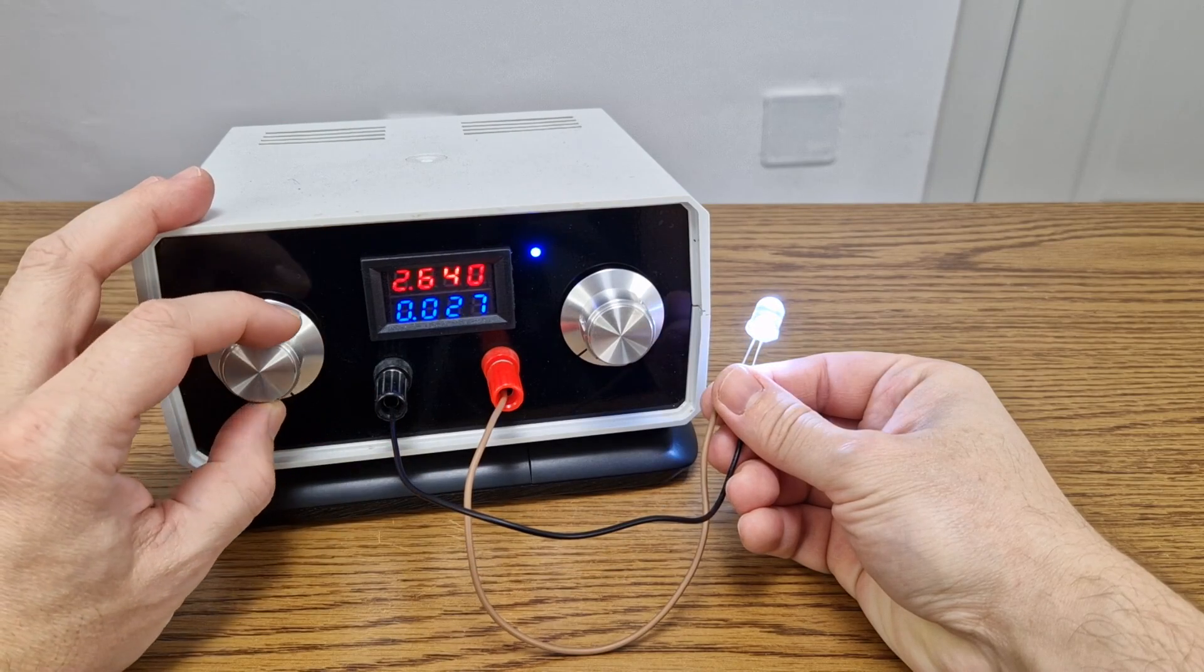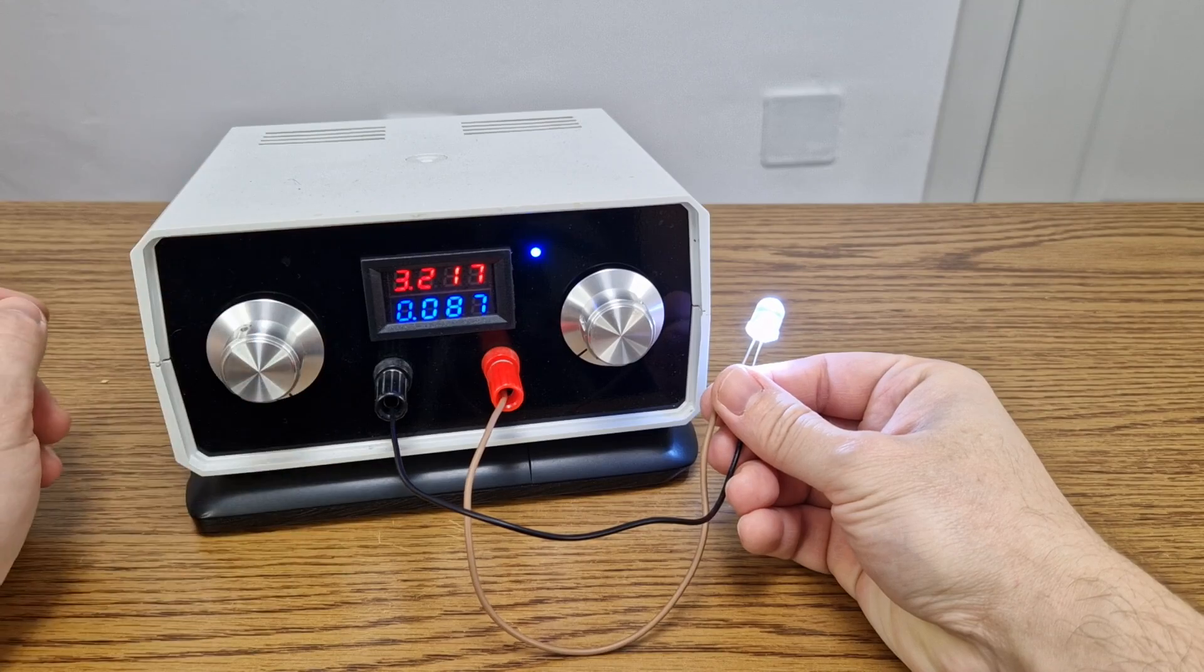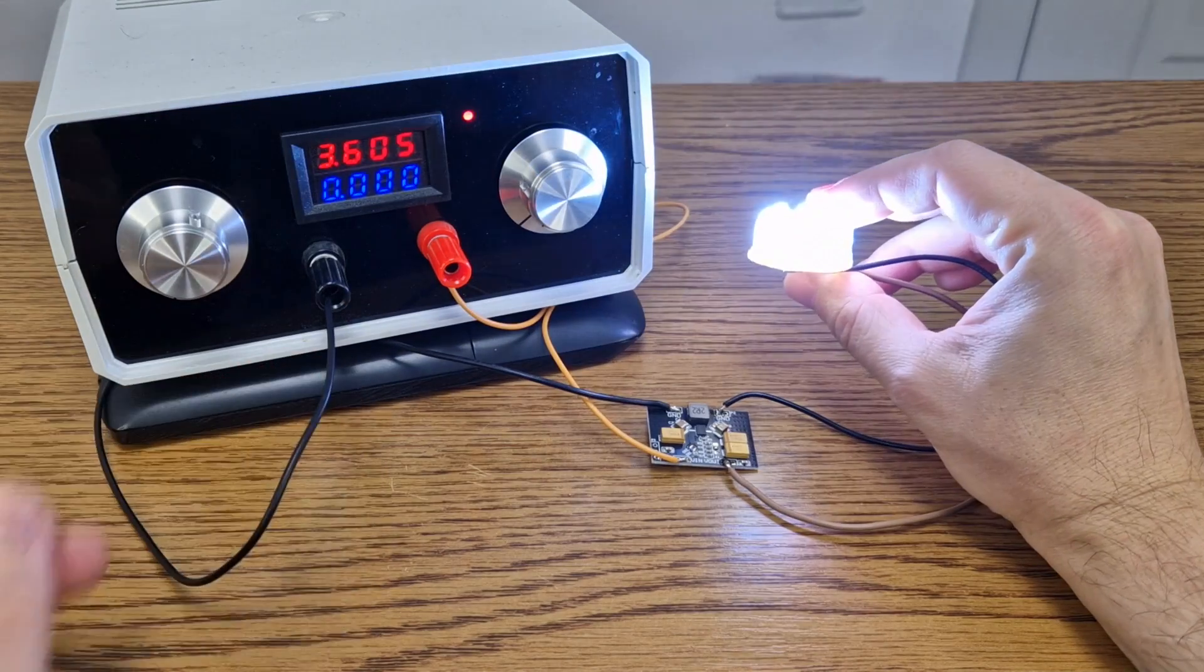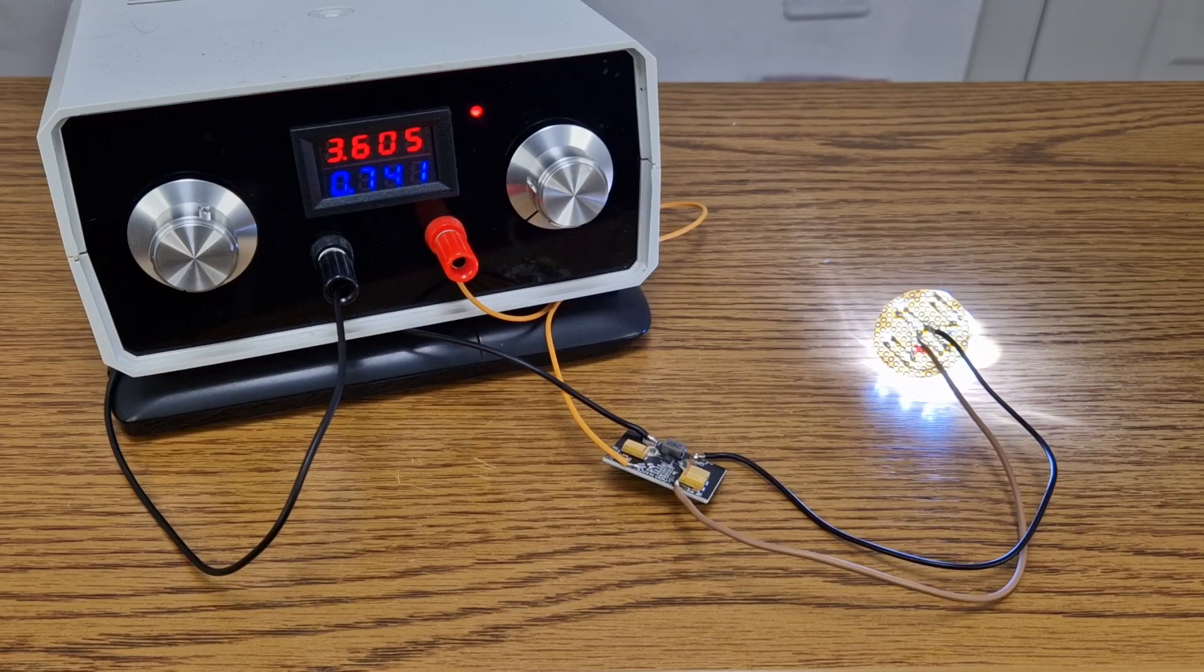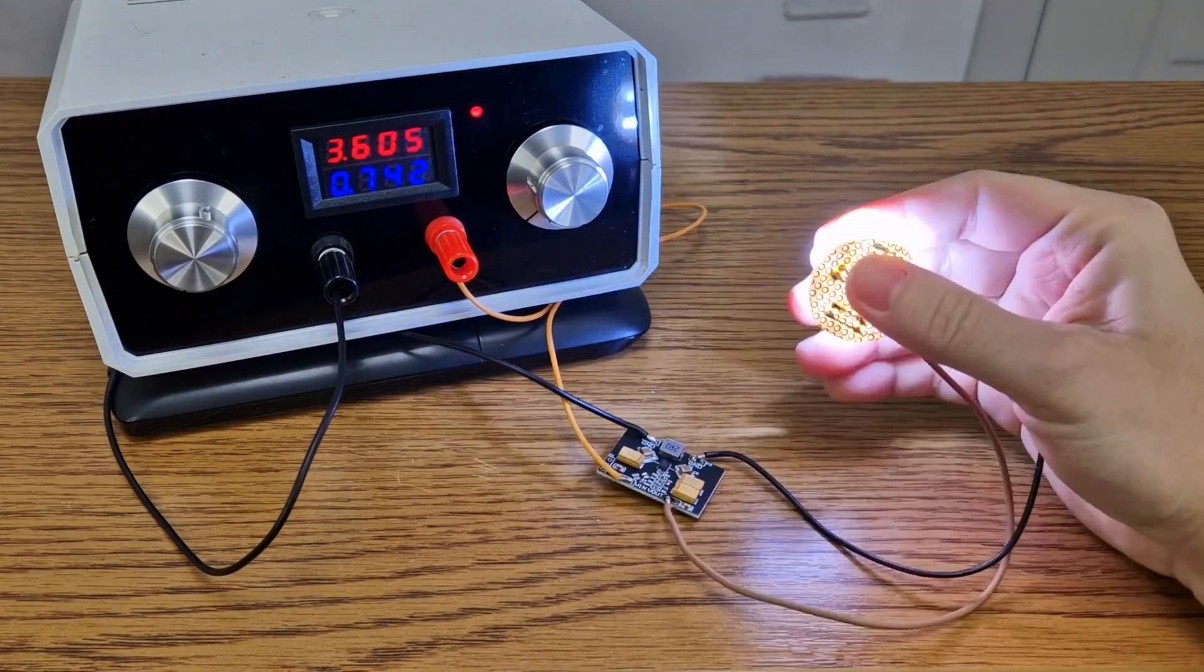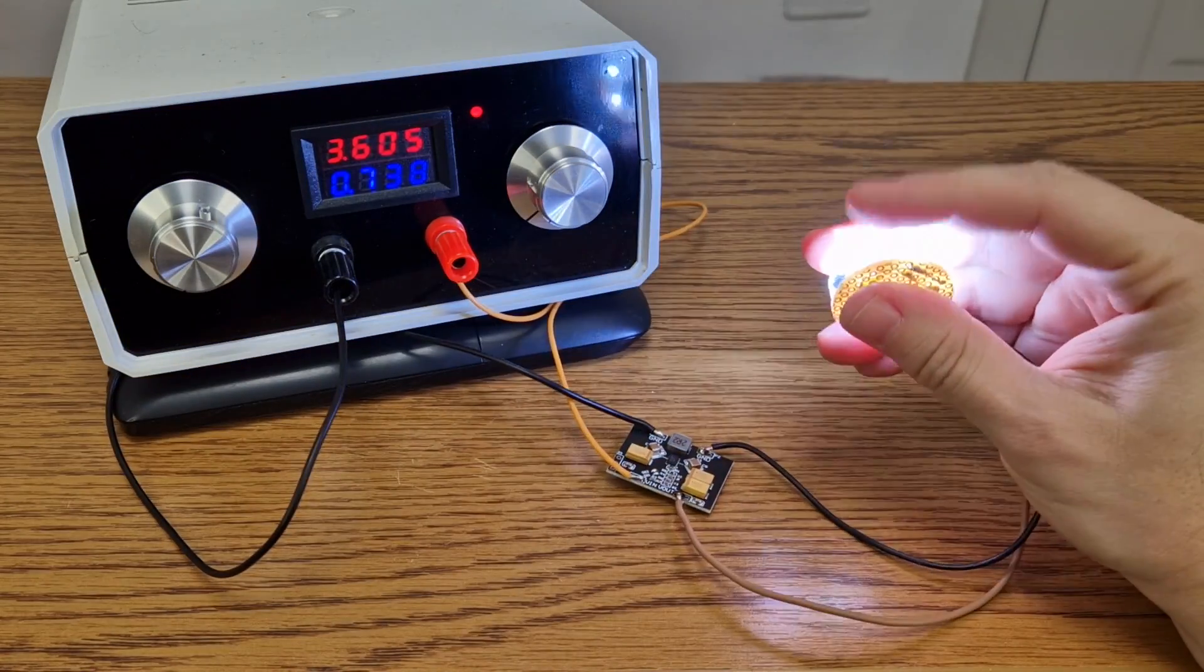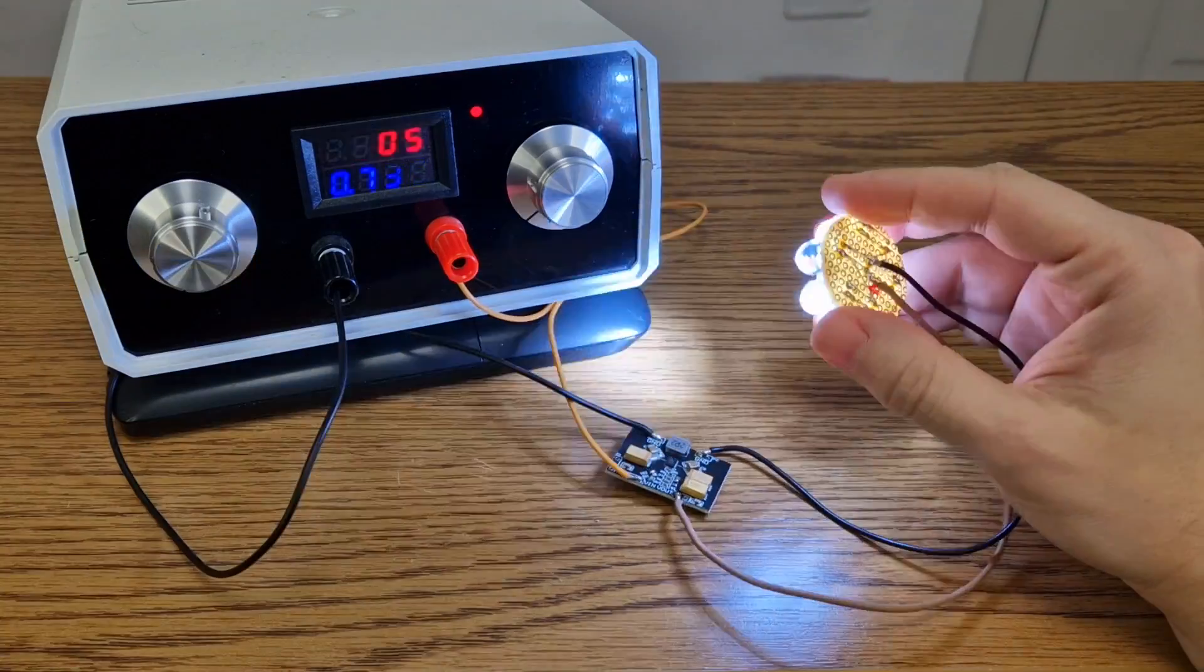But these LEDs are supposed to work with 3.2 volts. What would happen if I powered them with 3.3 volts? I left the converter power them with 3.3 volts for 10 minutes and they are fine. The LEDs only warmed up a bit.